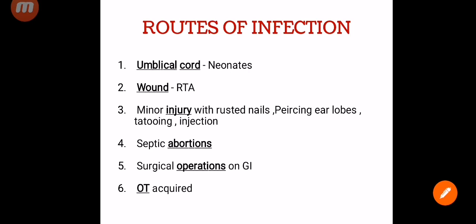Now let's see what are the routes of infection — how Clostridium Tetani gains entry into your body. The first one is the umbilical cord. Umbilical cord infections are seen in neonates, though not very common these days. Earlier there was a ritual of application of cow dung on the umbilical cord of infants, which caused increased incidence. The second route is through wounds — from major road traffic accidents, minor injuries with rusted nails, piercing ear lobes, tattooing, injection, septic abortions, surgical operations on the GI system, or operation-theater acquired if sterilization techniques are not proper.